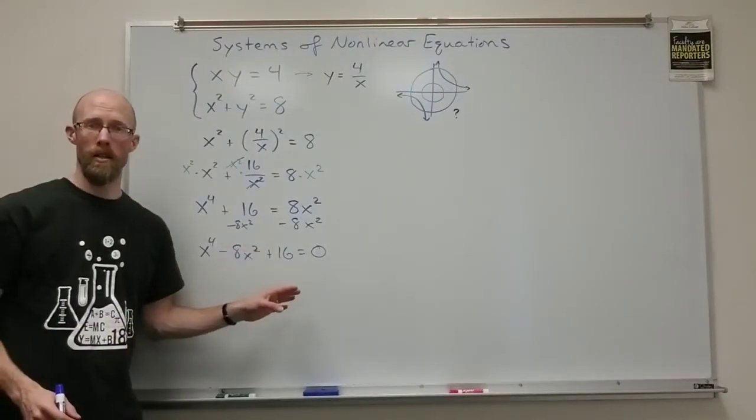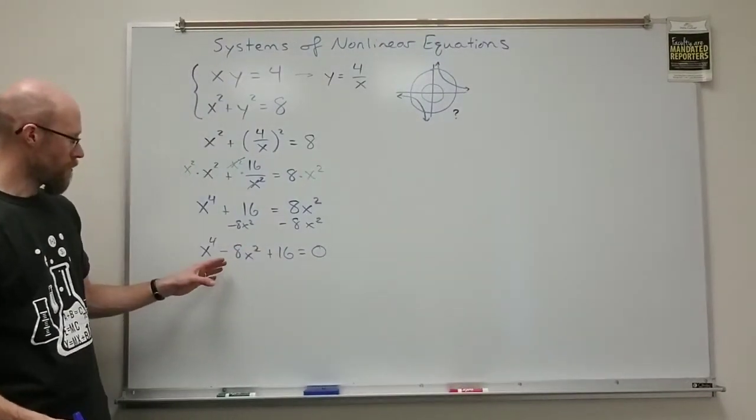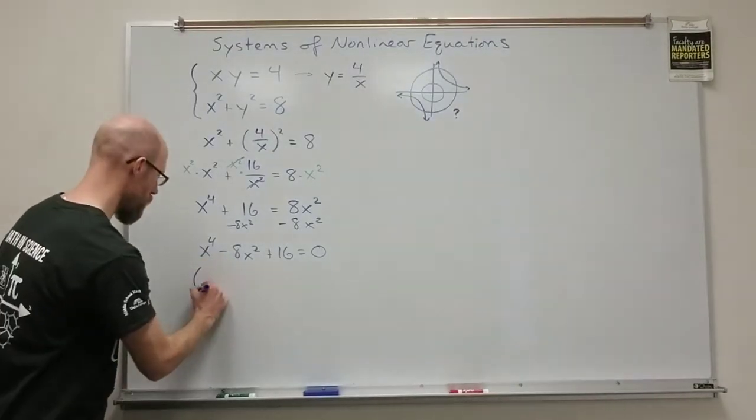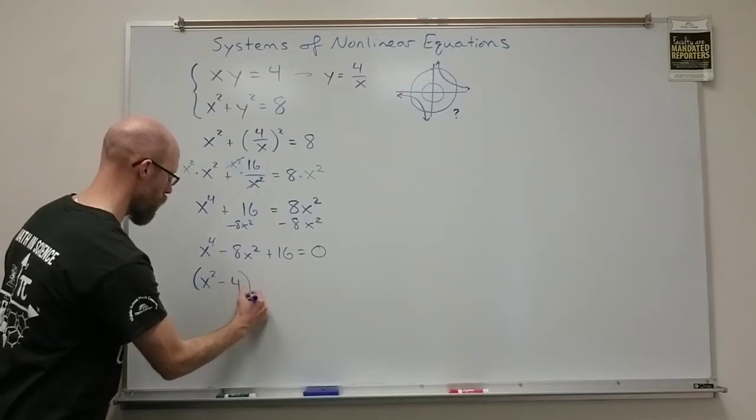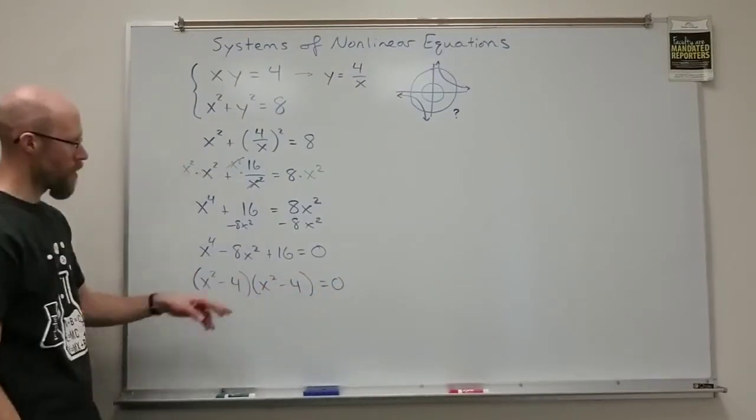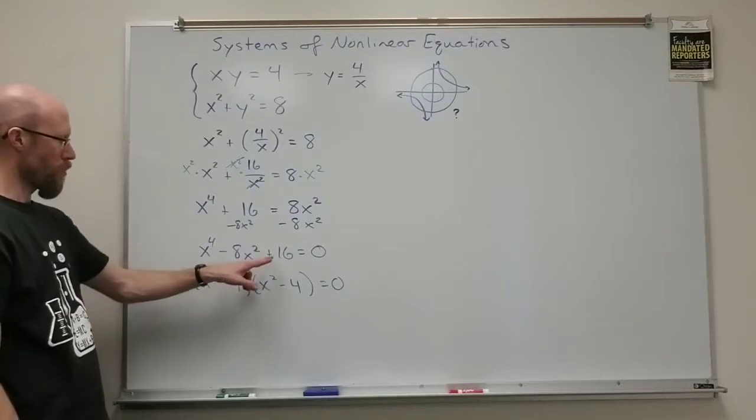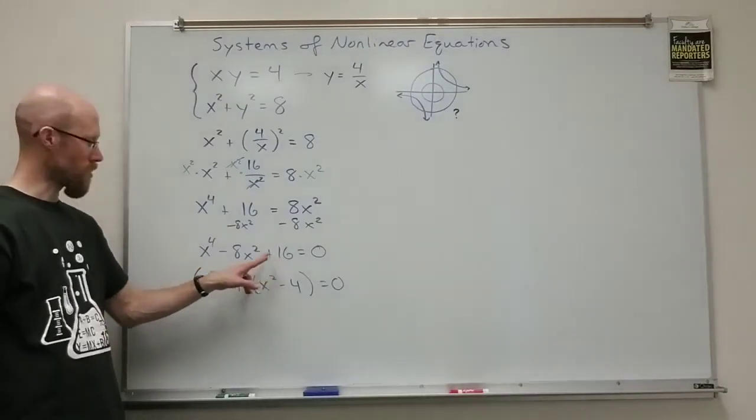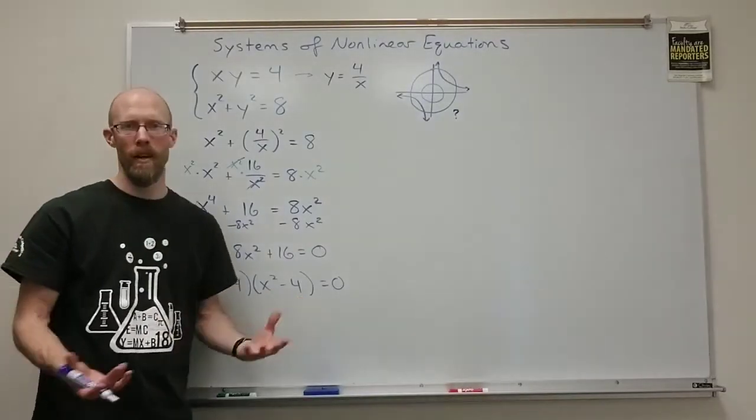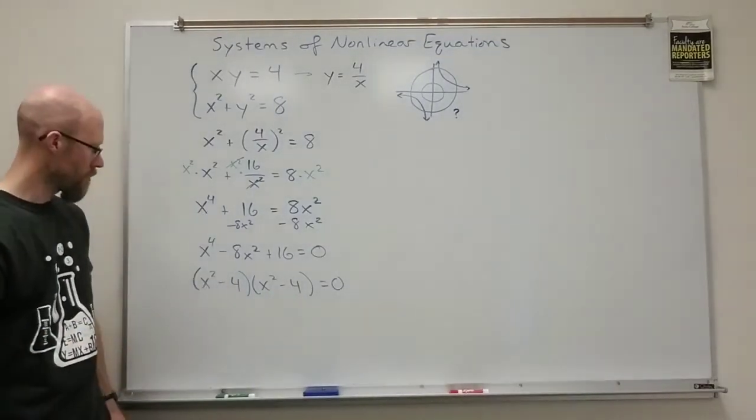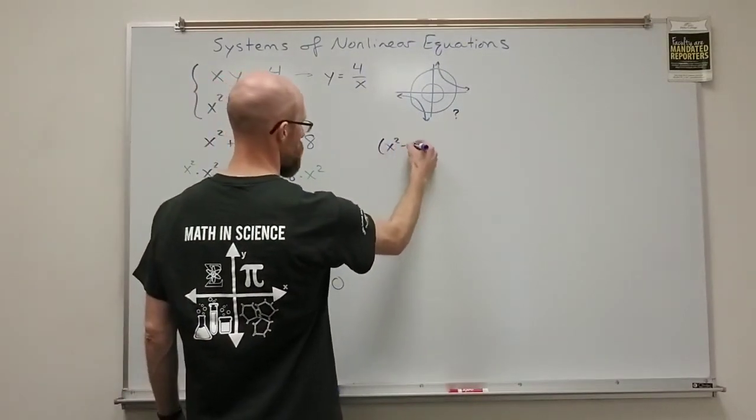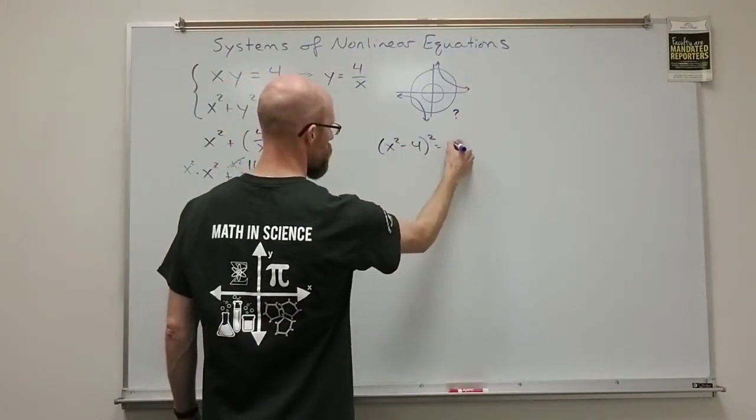Now, this is actually factorable. It's quadratic in form. And so, you could think of it as x squared minus 4 times x squared minus 4 equals 0. Negative 4 and negative 4, their product is 16 and their sum is negative 8. And each of these, actually that's x squared minus 4 squared. Bring it over here. So, x squared minus 4 all squared is equal to 0.